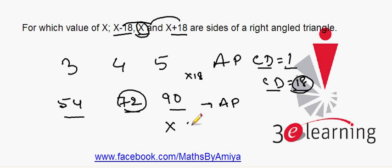Our answer is 72. The given sides are in AP. I hope this will take maximum of 4 to 5 seconds. We just have to identify the common difference, common difference is 18.